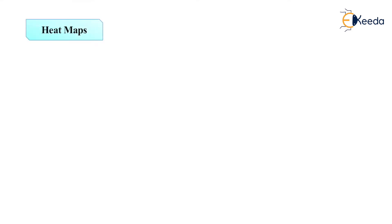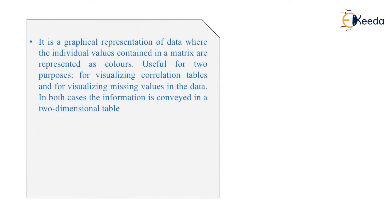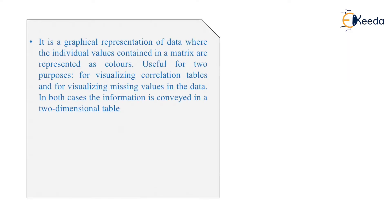Next is heatmap. In the previous video also, we have seen the heatmap. This is one of the heatmap. In this heatmap, what we do? Basically, it is a graphical representation of data, where the individual values contained in a matrix are represented as colors. Useful for two purposes: for visualizing the correlation tables and for visualizing the missing values in the data. In both the cases, the information is converted in a two-dimensional table.